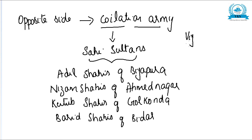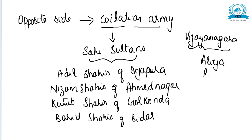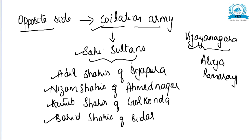So the two groups who fought the Battle of Talikote were: the coalition army of Shahi Sultans consisting of Adil Shahis of Bijapura, Nizam Shahis of Ahmadnagar, Kutub Shahis of Golconda, and Bharid Shahis of Bidar — and on the other side, the Vijayanagara troops led by Aliyah Ramaraya.